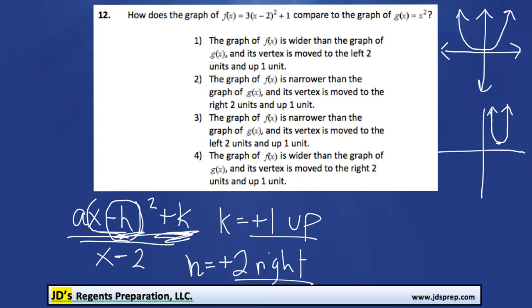So 1 up and 2 to the right means that it's not option number 1, it could be option number 2, option number 3 doesn't work, and it could be option number 4. The difference is number 4 is that it's wider, and number 2 is that it's narrower.